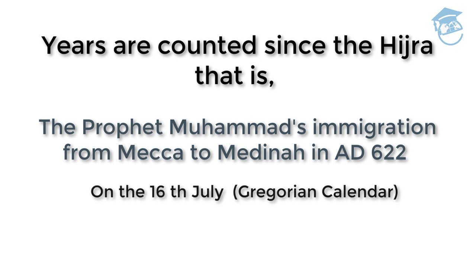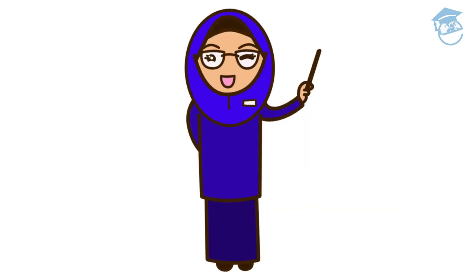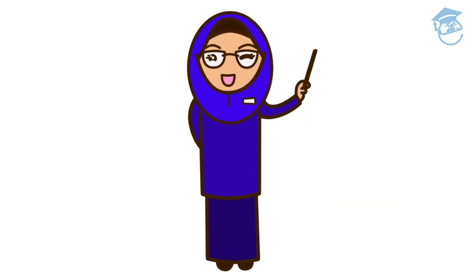On the 16th of July on the Gregorian calendar, AH-1 started. AH means Anno Hijri, the year of the Hijra. Now let's learn the Hijri months.